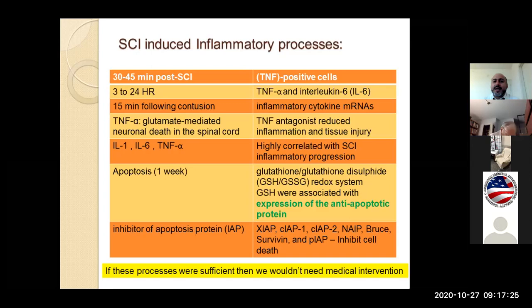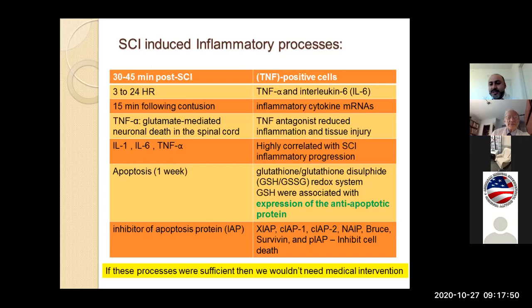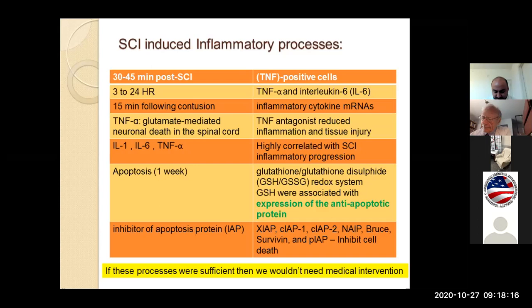On the inflammatory timeline: TNF is present at 30 to 45 minutes, and TNF-alpha and interleukin-6 appear within three to 24 hours. Interleukin-1, interleukin-6, and TNF-alpha are highly correlated with spinal cord injury and inflammatory processes. The human body also has protective mechanisms — anti-apoptosis expression of glutathione genes can protect the person, as can genes such as NAIP, BRUCE, or SURVIVIN, which are inhibitors of apoptosis protein. They protect humans during the course of injury, but if these processes were sufficient, we wouldn't need medication intervention.